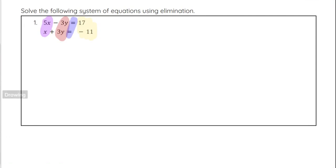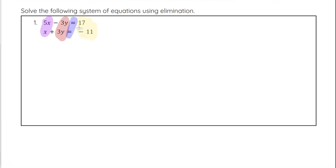It doesn't necessarily have to be in that order, but we do have to make sure that when we're adding those equations together, we want our x's to be able to be added together, our y's, our constants, in the same spot vertically, including those equal signs. When we look at this, we see that we have 5x and 1x — if I added those together right now, I would not get 0; they would not eliminate.